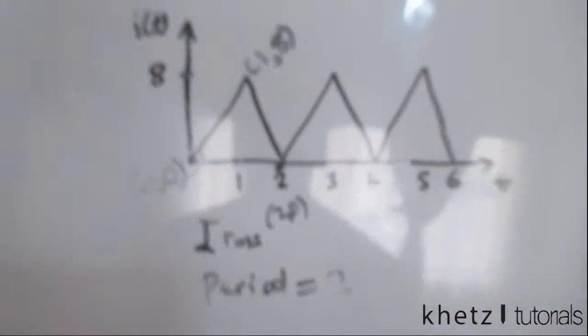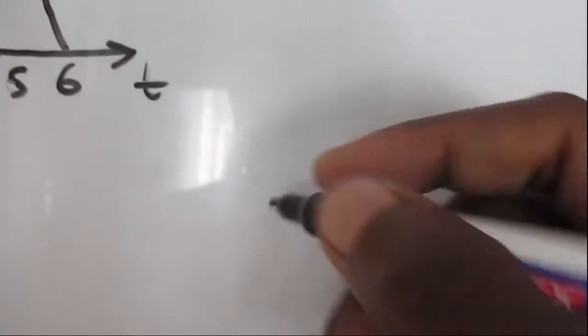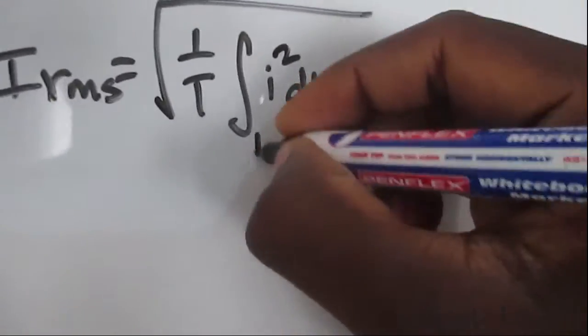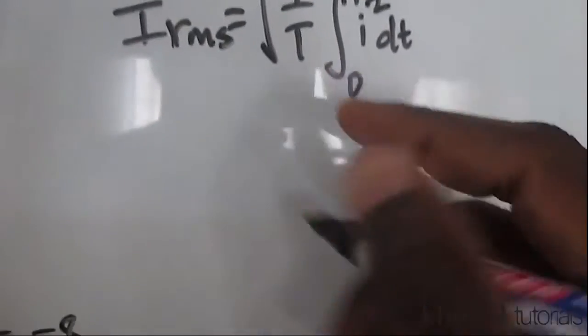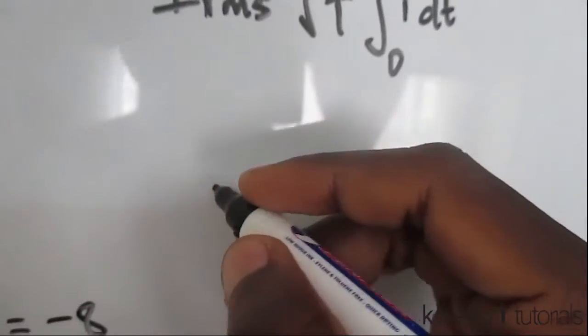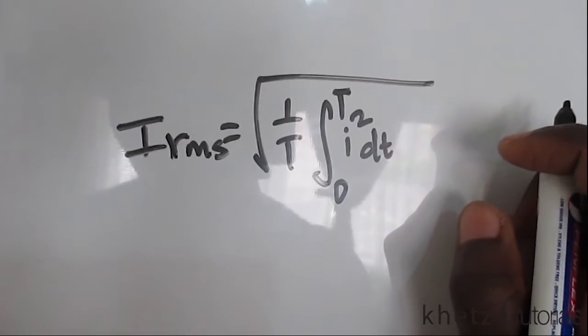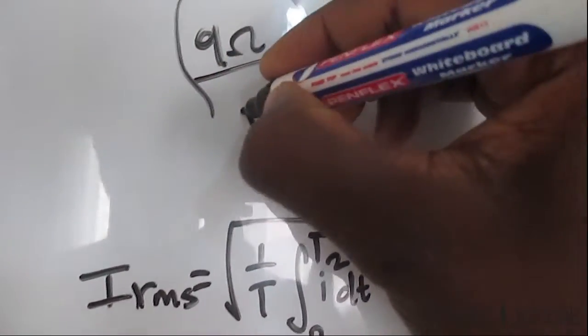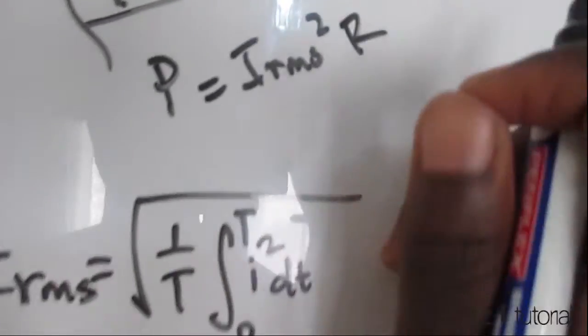We now have the formula for one period of this function and we can now proceed to actually compute our IRMS. This is our root mean square, which means we take the root and we take the mean and finally we take the square. This is the formula which we have to use. Now considering each of the sections, we are basically going to split this into two integrals. The second part of the question is asking for the average power absorbed by a resistor of 9 ohms. Let's start by finding our IRMS because the average power is IRMS squared multiplied by the resistor value.